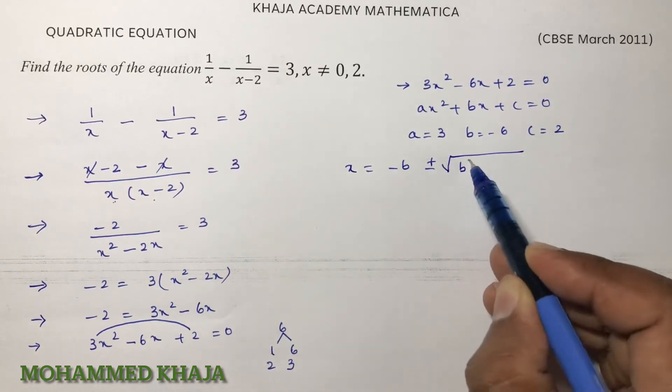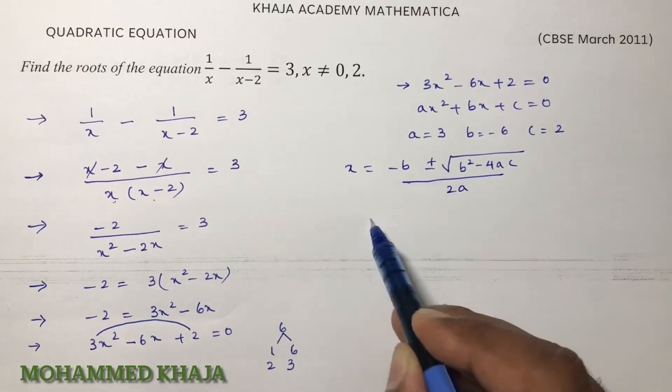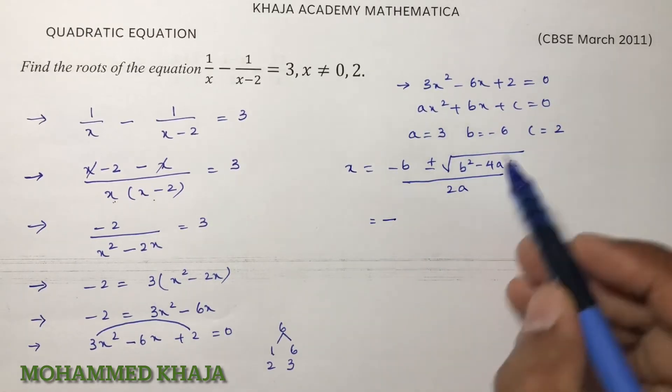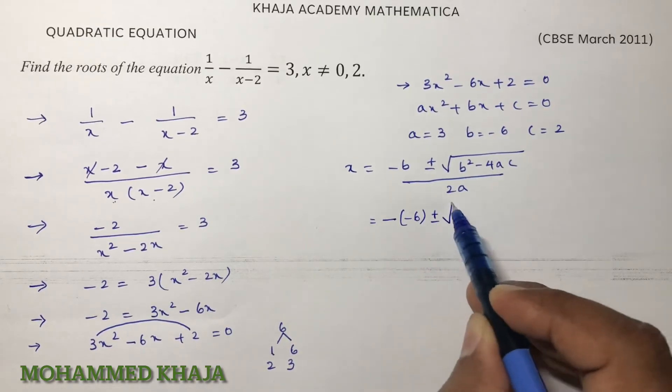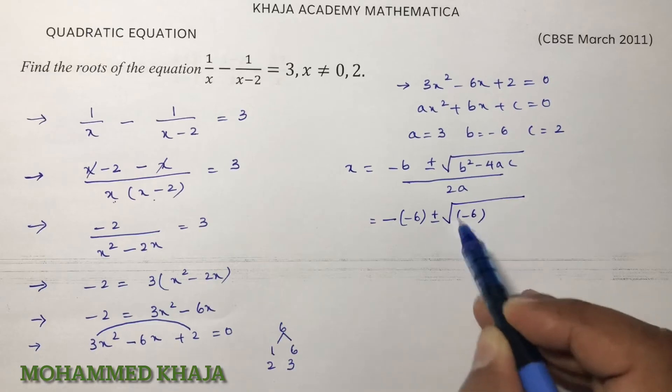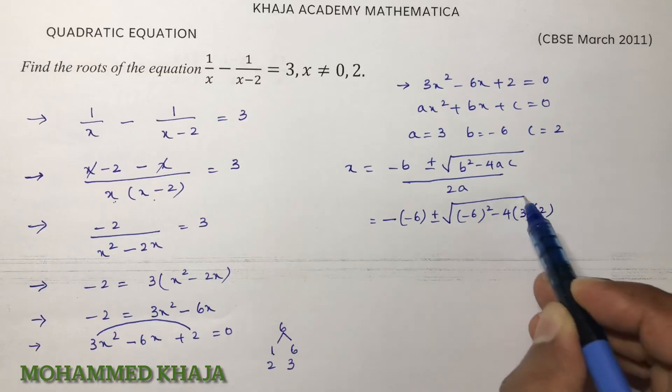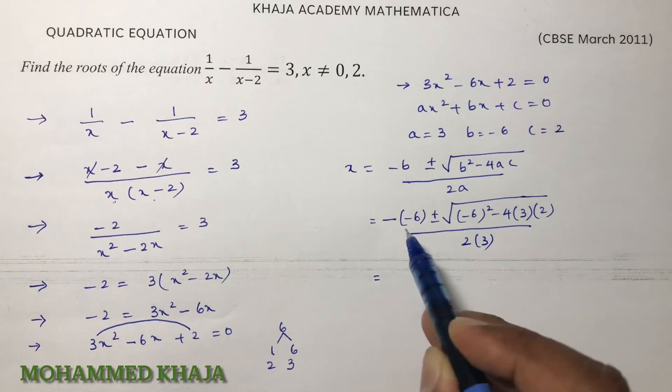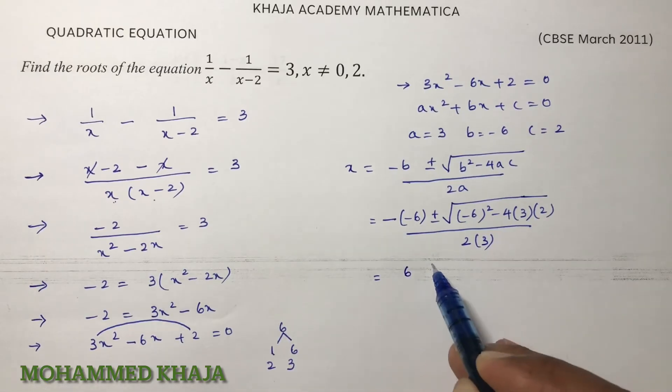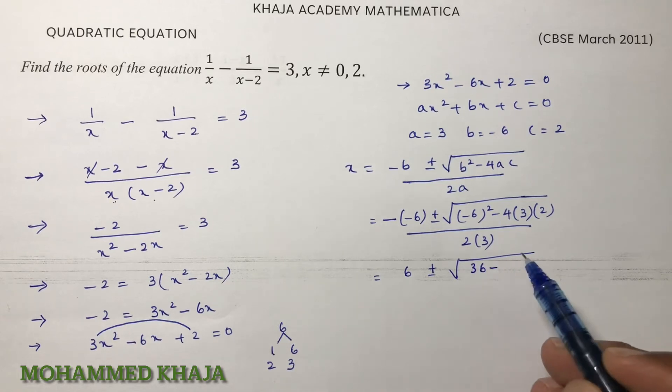Now quadratic formula is x = (-b ± √(b² - 4ac))/2a. -b is -(-6) = 6 plus or minus under root (-6)² - 4 × 3 × 2, by 2 × 3. = 6 ± √(36 - 24)/6.